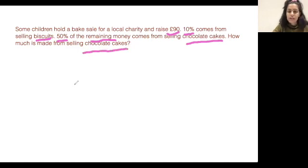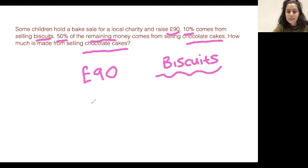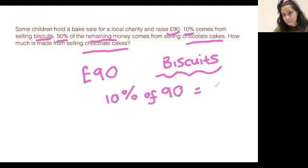Right, so first things first, let's write the total amount here. We know that 10% comes from selling biscuits. So if I write biscuits over here, and let's find out 10% of 90. So like the question before, to work out 10% of something, you just divide the amount by 10. So 90 divided by 10 is nine. But that's not where we stop. So we know 10% of 90 is nine, so we know that nine pounds was made for selling biscuits.